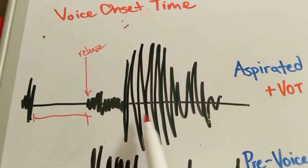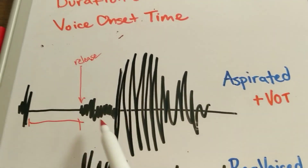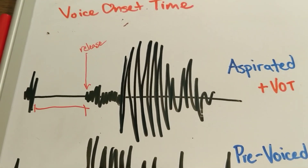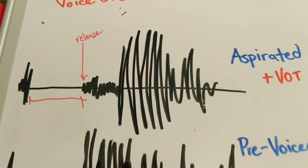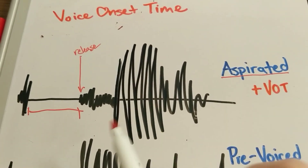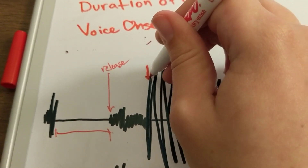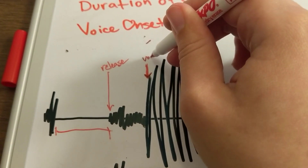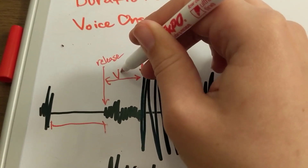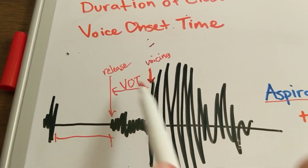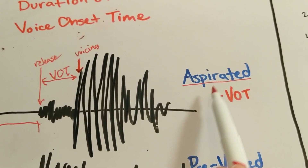You release the air before you kick in your voice box — before you start making a vowel, there's a release. Plosives like this are called aspirated. You can tell if your plosive is aspirated by putting your hand in front of your mouth and going 'pa' — if you can feel a puff of air, then it's an aspirated plosive. The time between the release and the onset of voicing is your voice onset time, or VOT. If the release is on the left and voicing is on the right, you have a positive voice onset time and an aspirated plosive.